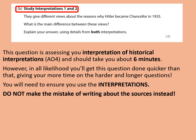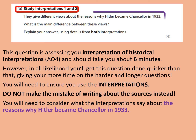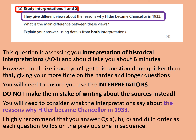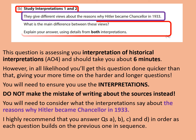Let's read the question: Study interpretations one and two. They give different views about the reasons why Hitler became chancellor in 1933 — that's our inquiry. I highly recommend that you answer questions A, B, C and D within paper three in the order they appear. These are sequenced together, so do question A on the sources, then B, C and D in order, so that you consider the difference between the interpretations, consider why they are different, and then consider which one you most agree with. To answer this question, identify the main difference between the views and use details from both interpretations, not just one.